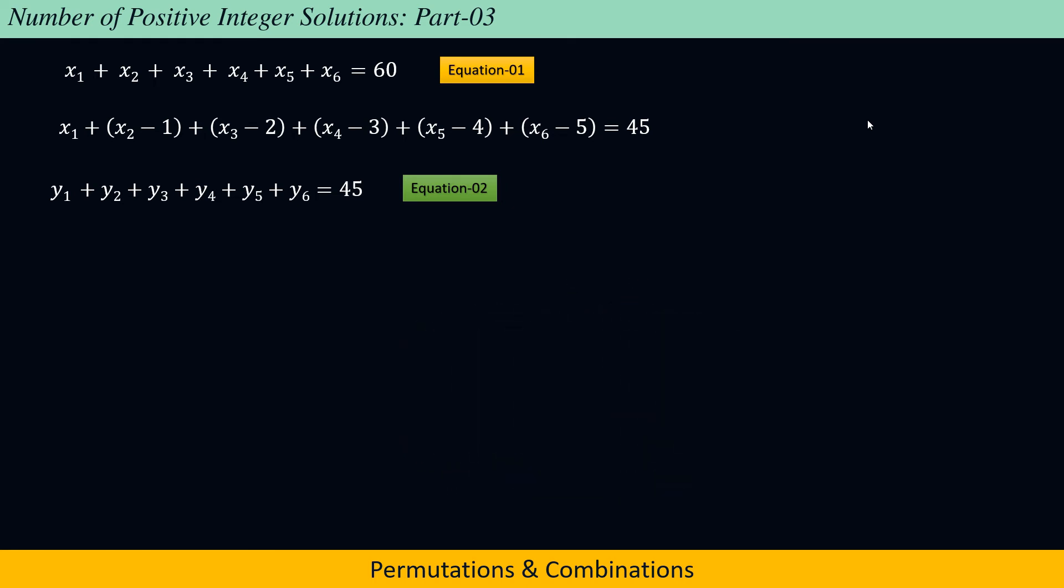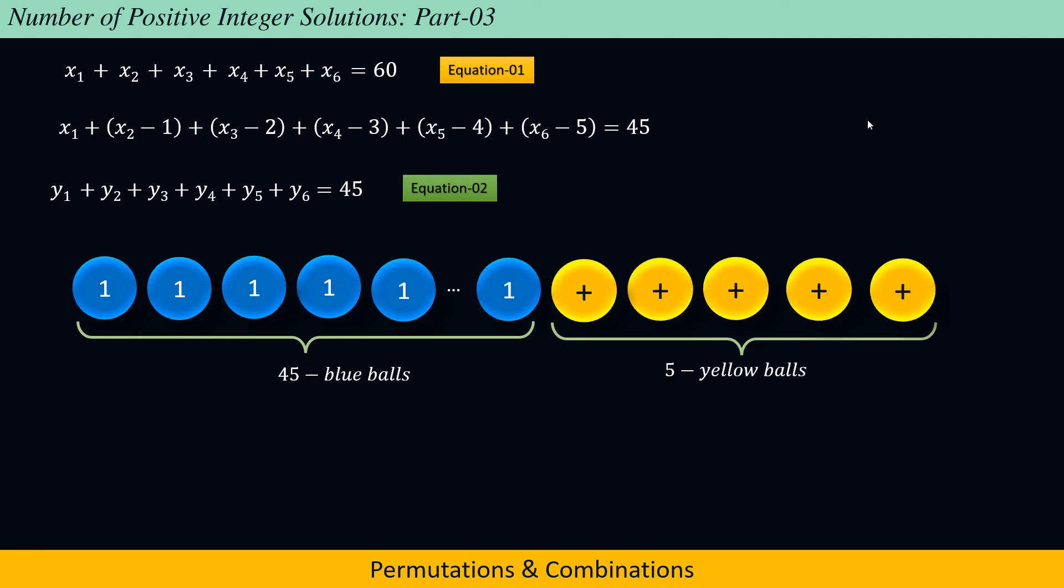This is equivalent to arranging 45 blue colored balls and 5 yellow colored balls, and the good part is that we know how to do it. This is very well explained in part 1 and part 2 of the lecture series.